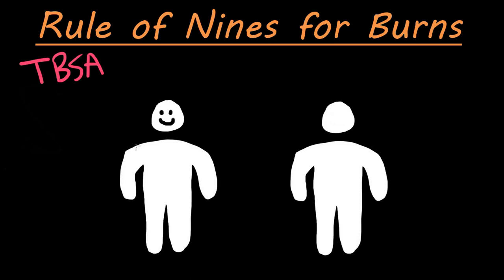So we go over to our 2D model of a 3D person that's very poorly drawn with a floating head as well. What you need to know is that this is going to be divided into 11 sections of 9 — so 11 areas times 9% gives us 99%, and then we have one little area that's 1%, giving us 100% of the body. Depending on how much burn a person has, if it's only their arms, it obviously won't be 100%.